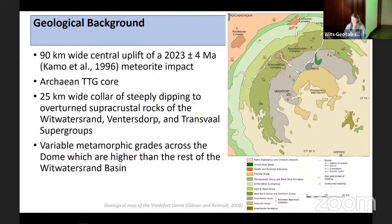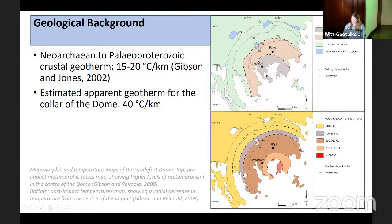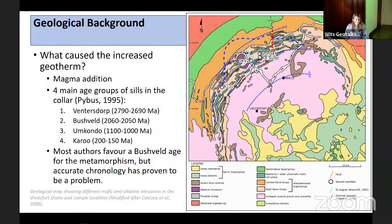The core of the dome is TTG and gneiss surrounded by a 25 kilometer wide collar of steeply dipping to overturned supracrustals of the Witwatersrand, Ventersdorp and Transvaal supergroups. We see variable grades of metamorphism across the dome, which is higher than the rest of the Wits Basin. In the core we have granulite facies metamorphism that goes into amphibolite facies and then green schist. Many metamorphic rocks in the innermost collar have an apparent geotherm of 40 degrees per kilometer.